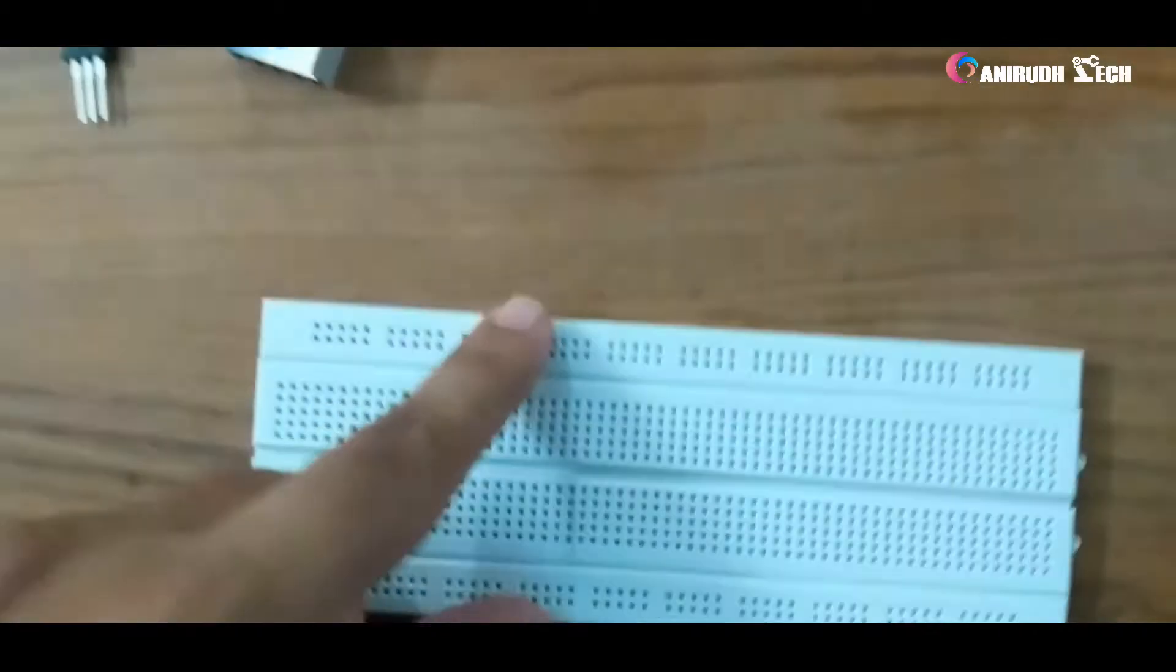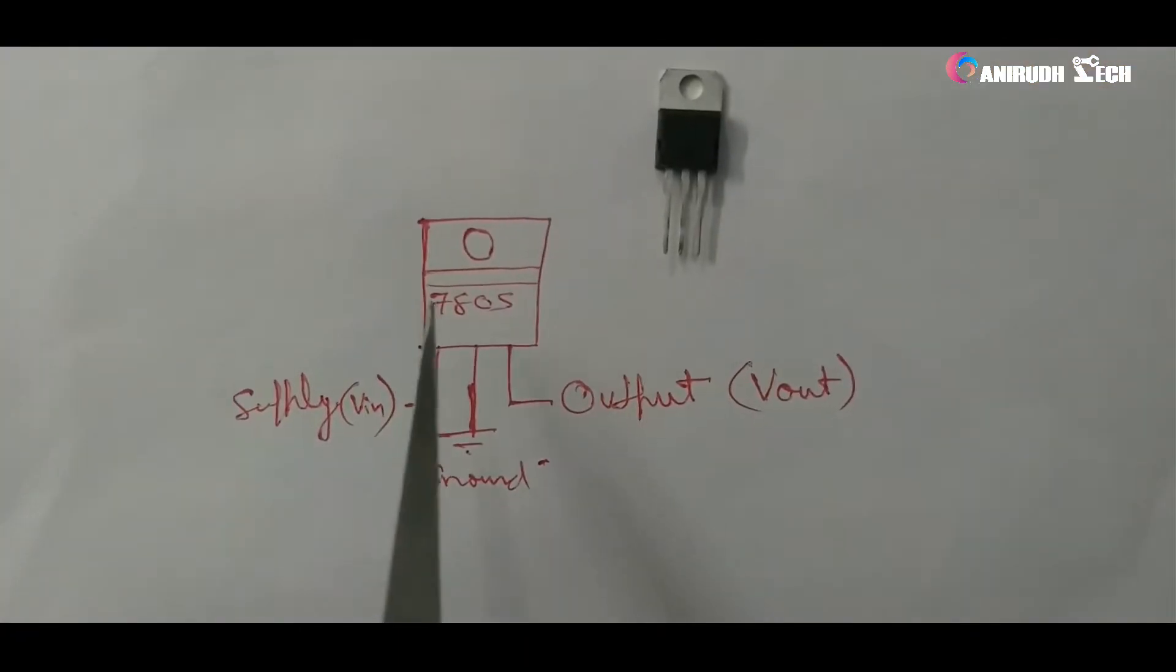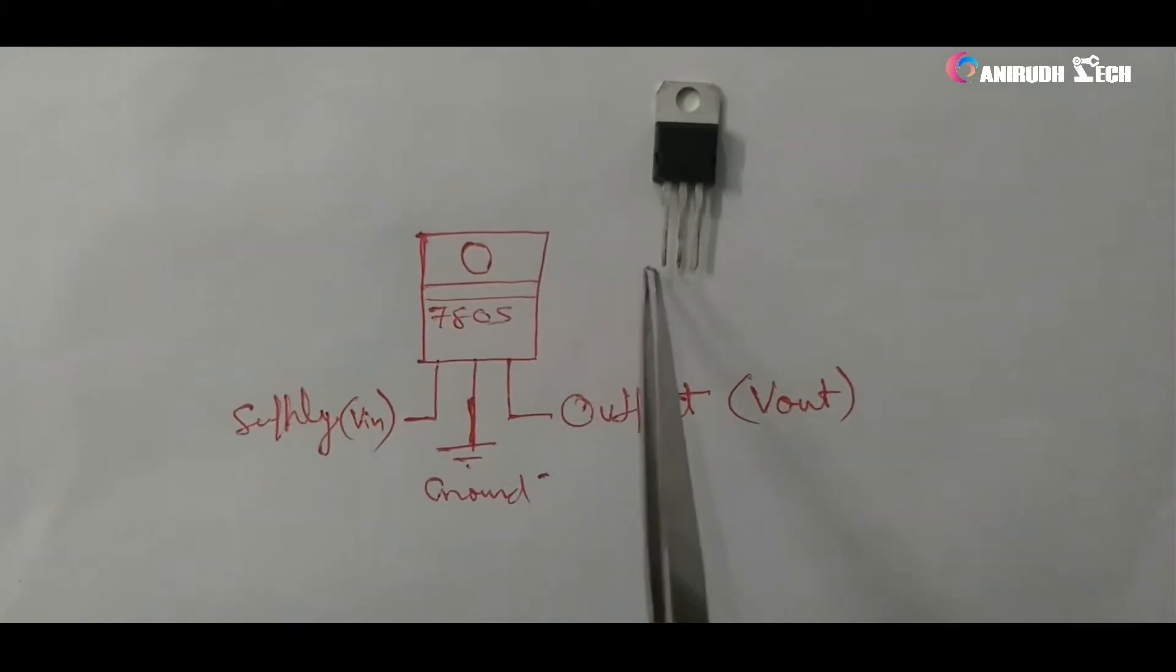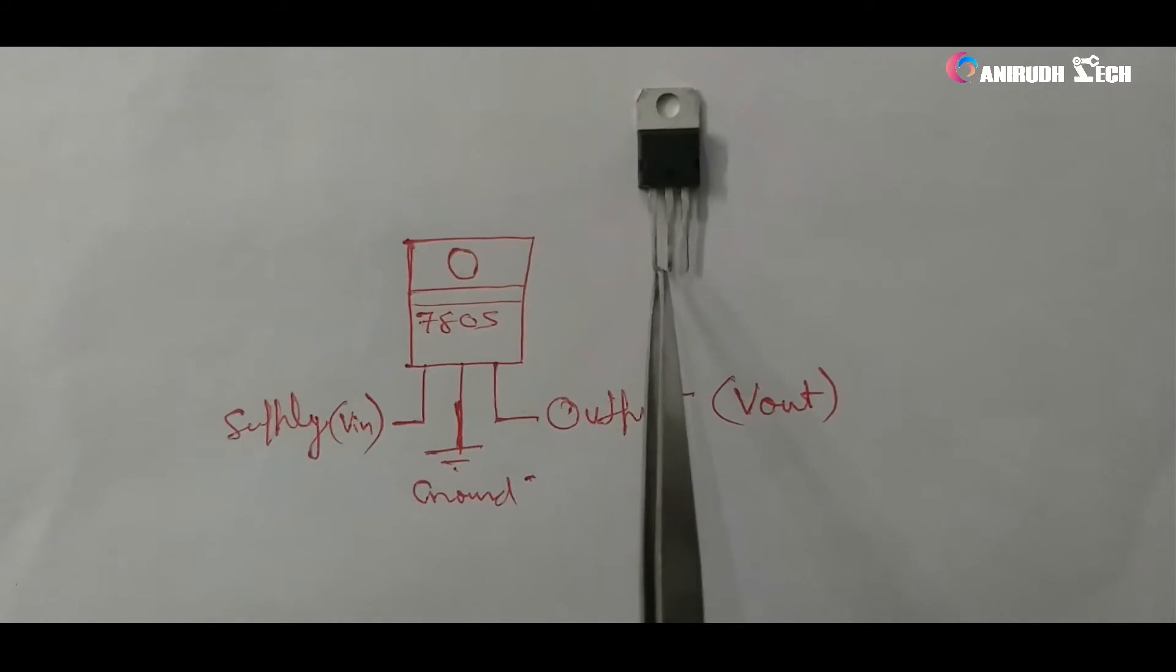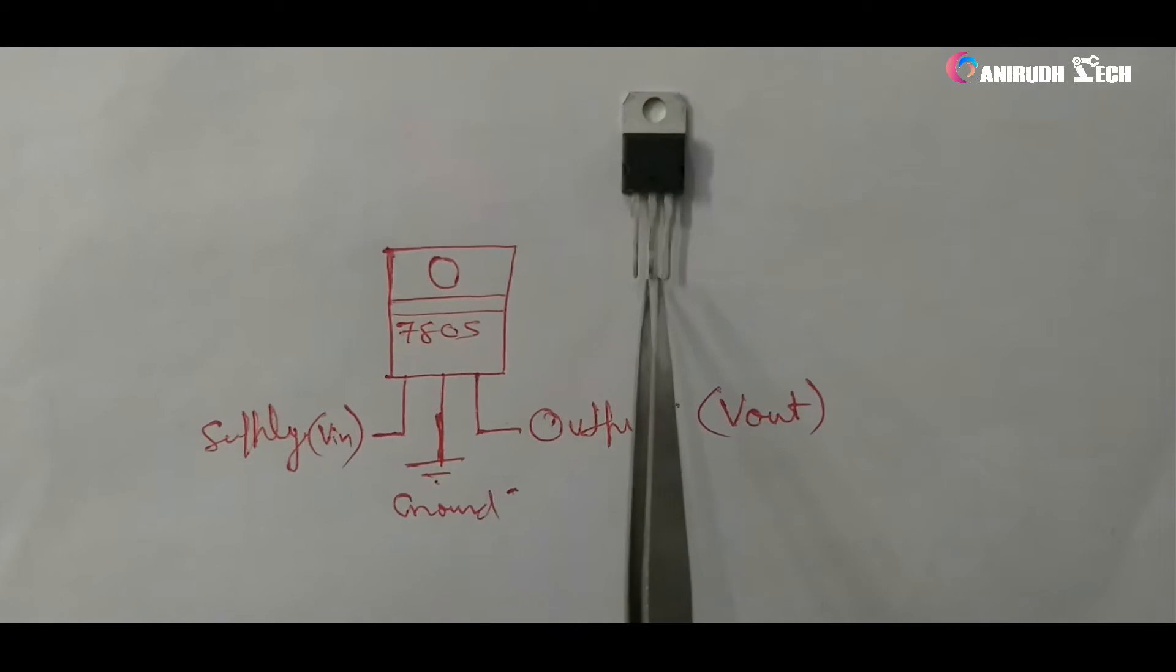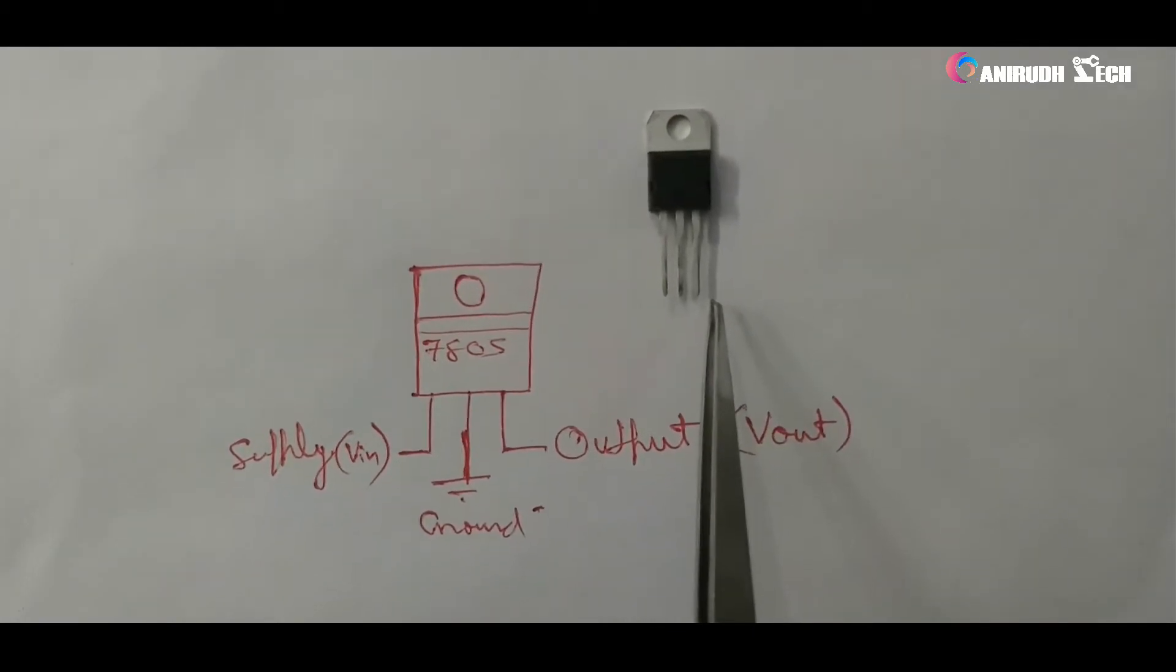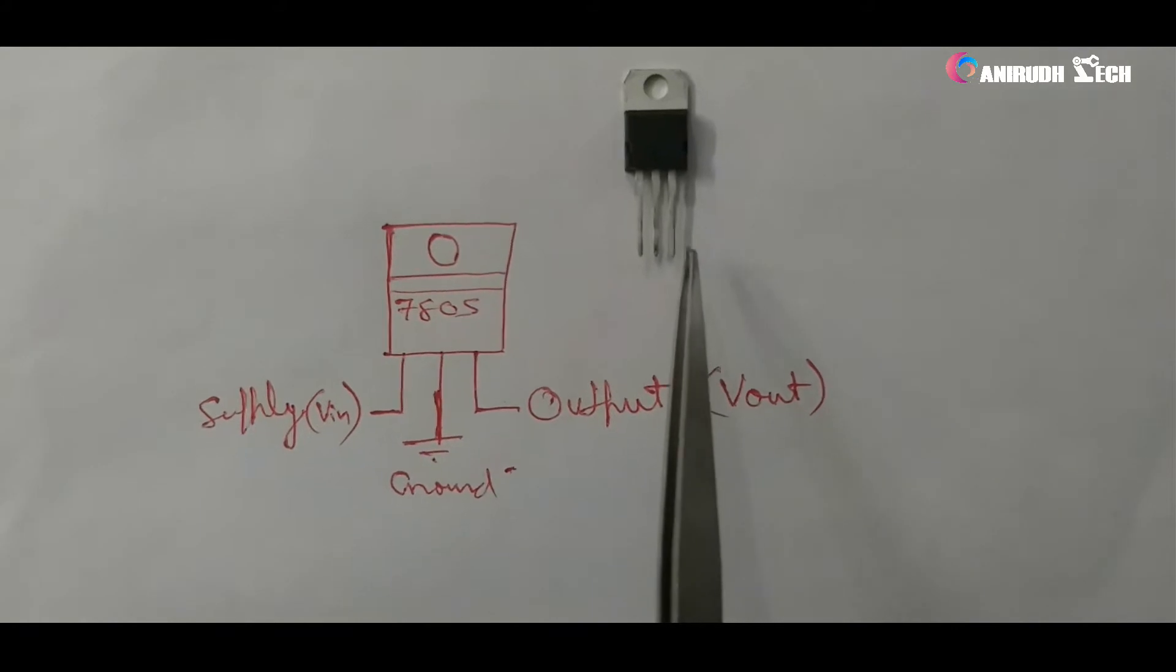So I'm using a breadboard for demonstration. First of all we can see the pins of 7805 IC. First pin is supply pin, we want to supply our input here. The second pin is ground reference. And the third pin is output pin, we will get the 5V output from this pin.